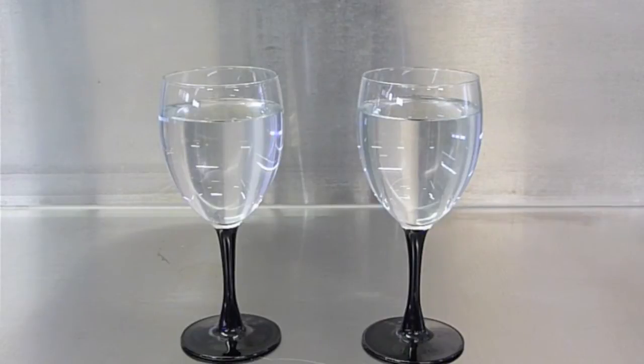Reverse osmosis water, however, has a pH below 7, which means it's acidic. It also has no minerals in it left whatsoever. The glass on the left hand side is reverse osmosis water, and the one on the right hand side is spring water.